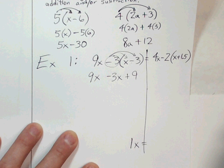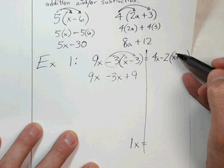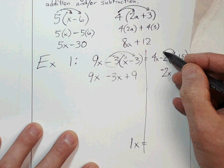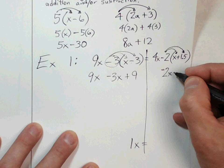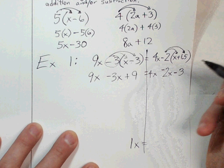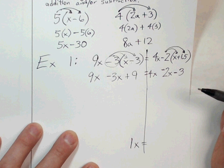Now for the right-hand side: I'm distributing a negative 2 because the sign in front is negative. Negative 2 times x is negative 2x. A negative times a positive is a negative, so negative 2 times 1.5 is negative 3. The 4x slides down, giving us 4x minus 2x minus 3 on the right side.